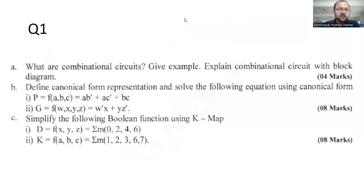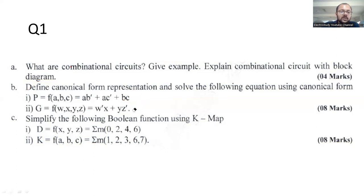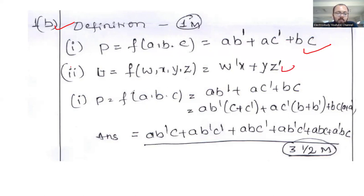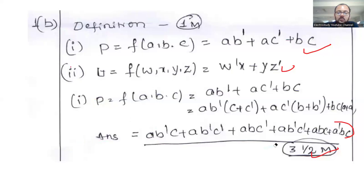Question number 1b: define the canonical form of representation and solve the following equations using canonical forms — SOP and POS. Give the basic definition of canonical form, SOP and POS forms. POS is the product of sum form. These are the representations, and the ultimate answer will be shown in the given fashion. You will be getting three and a half marks.